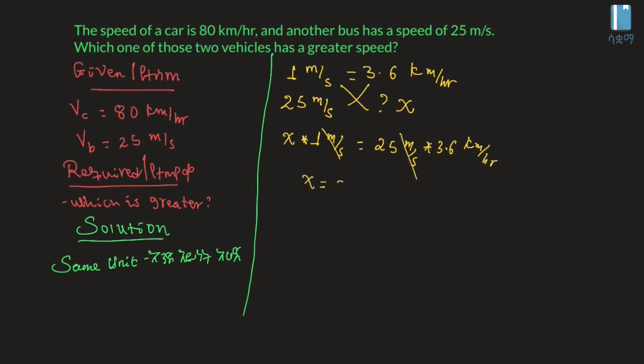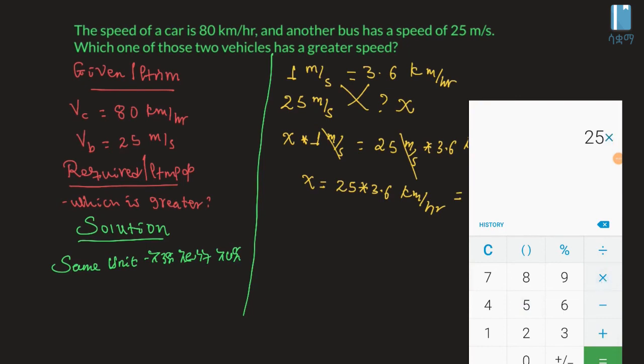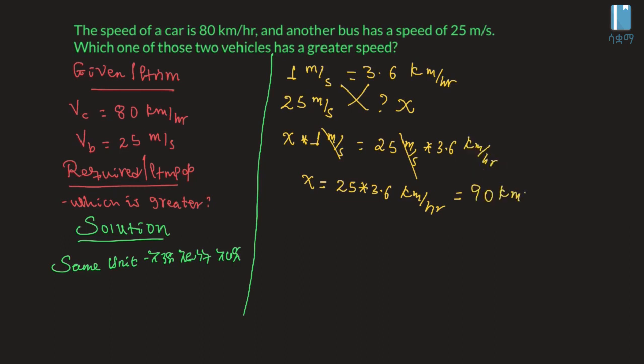So 25 times 3.6 km per hour. How much is this? Speed of bus, vb, becomes 90 km per hour. So vb is 90 km per hour.